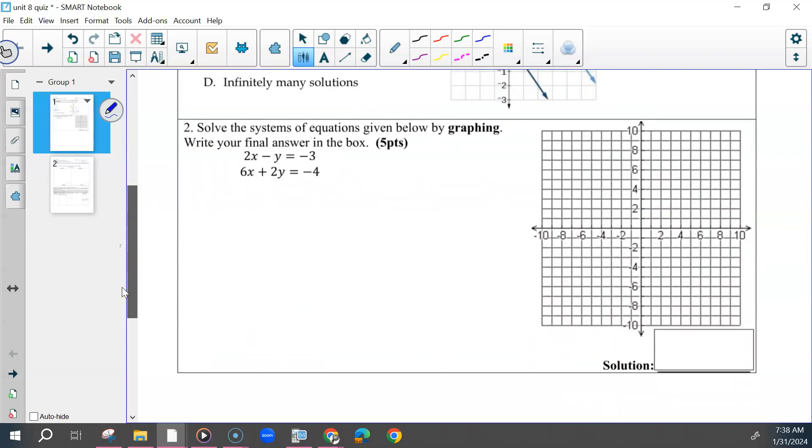For number two, you should have put both of these in your slope-intercept form. So subtract your 2x, subtract your 6x. And then, this one we should have divided by negative 1, and this one by 2. So y equals 2x plus 3, and y equals negative 3x minus 2. Some of you forgot this negative, and then that changed your equation. So be careful there.